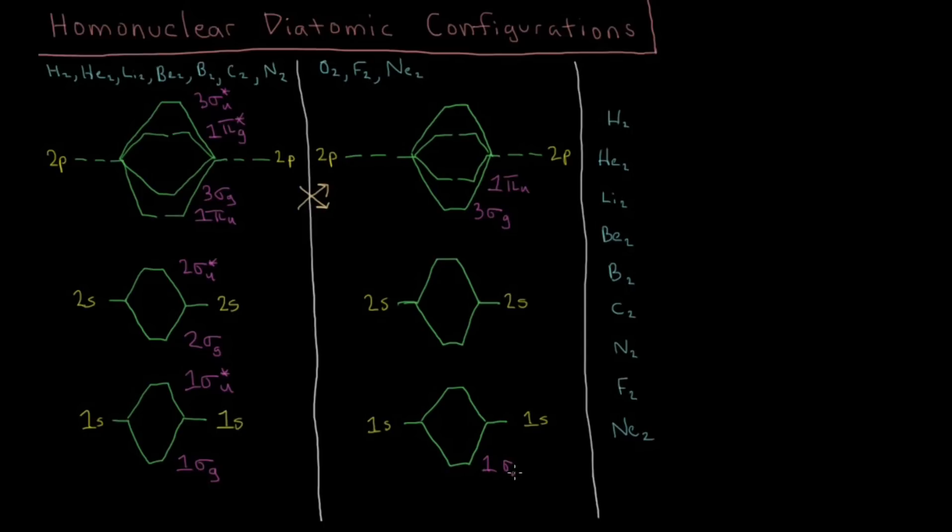So over here, everything else is the same. We've got 1σg, 1σ*u, 2σg, 2σ*u, and then 1π*g, and 3σ*u. Okay, so these are our energy levels.